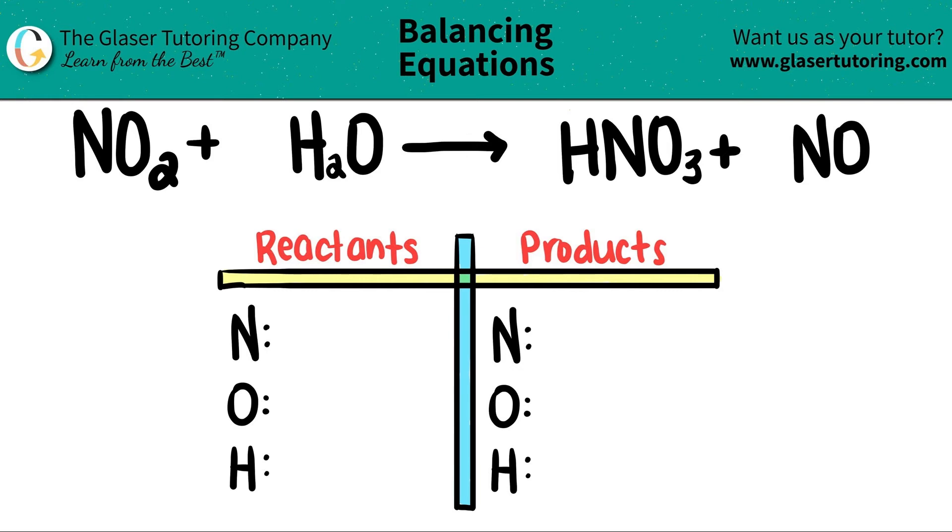Today, we are going to be balancing the equation NO2 plus H2O, and when they come together, that will yield HNO3 plus NO. I already wrote down our little balancing chart, as well as the elements that I see on both the left and the right sides. So all we have to do is just say how many we're starting with, and then we will start the balancing.